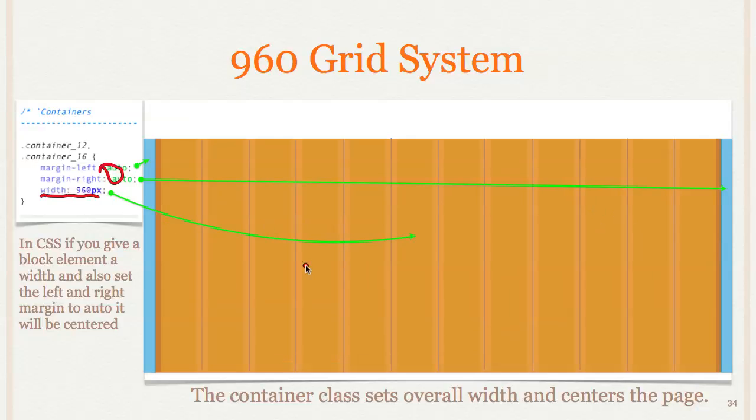So that's it there. The blue here is the margin. The orange is the width. So that's the container, and that's why you need some kind of div or whatever around everything with your class of container.